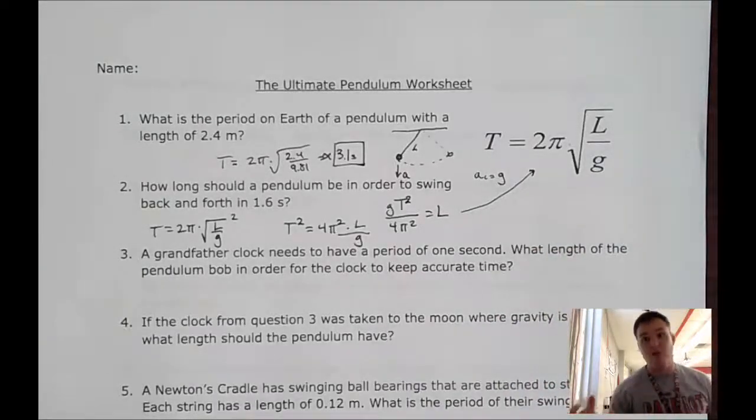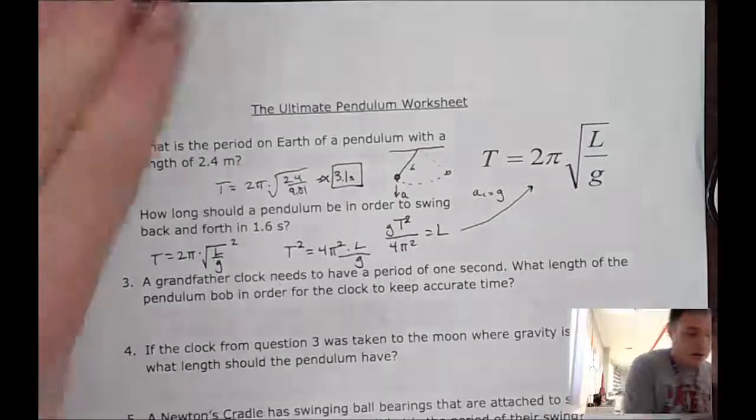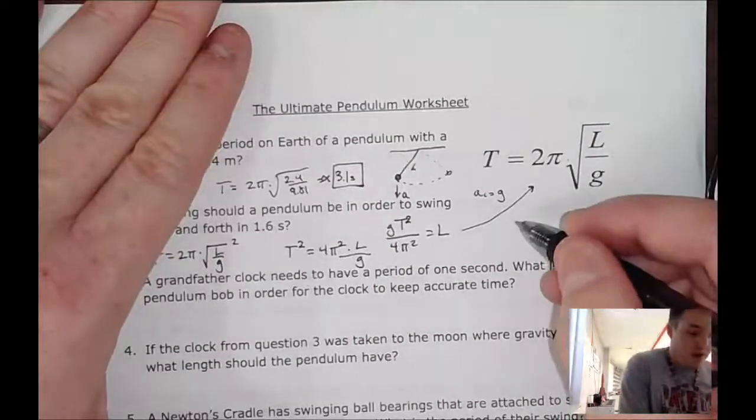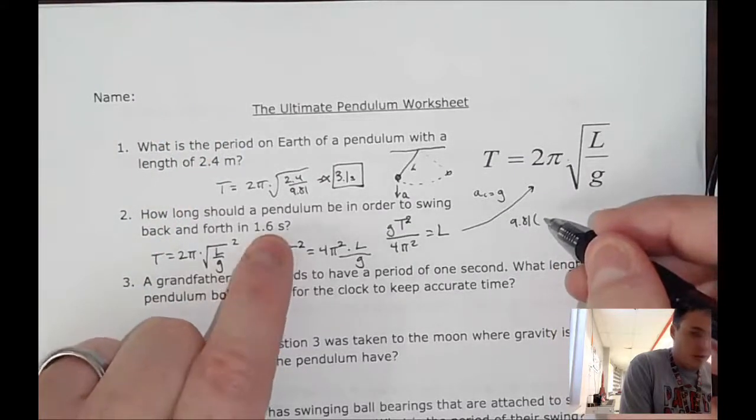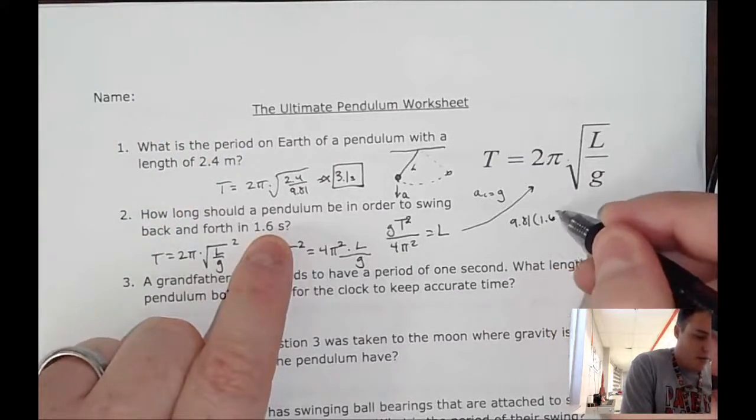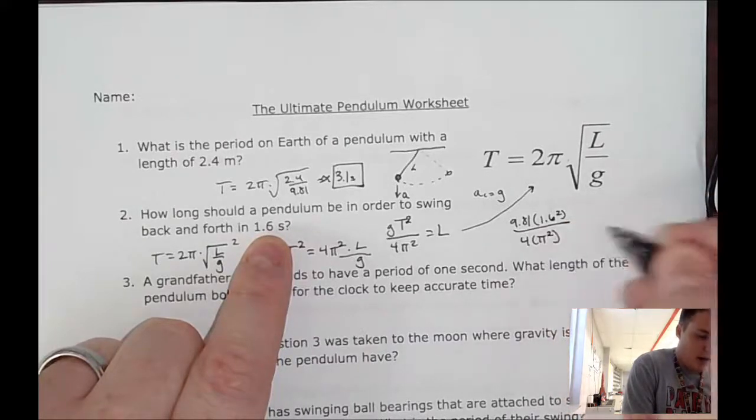So now going to solve for this, all I have to do is take my gravity, which is 9.81, times the period squared divided by 4 times π squared. And that should give me how long that period has to be.